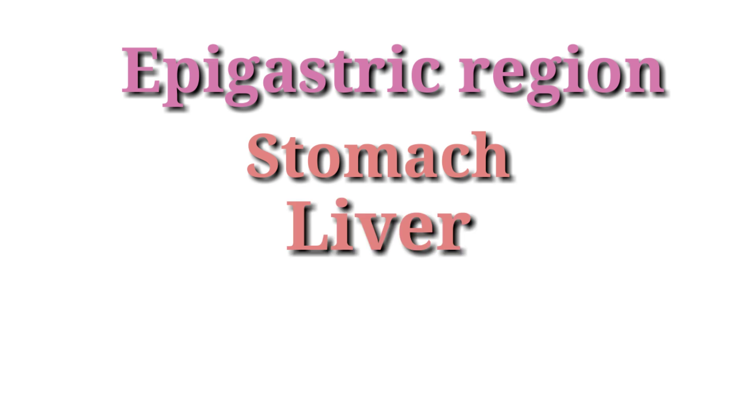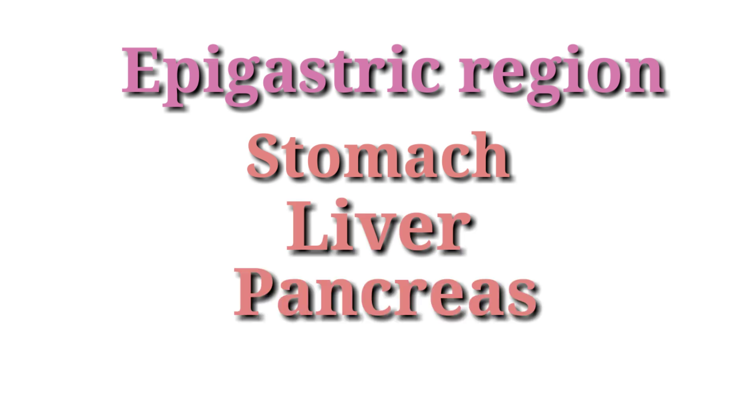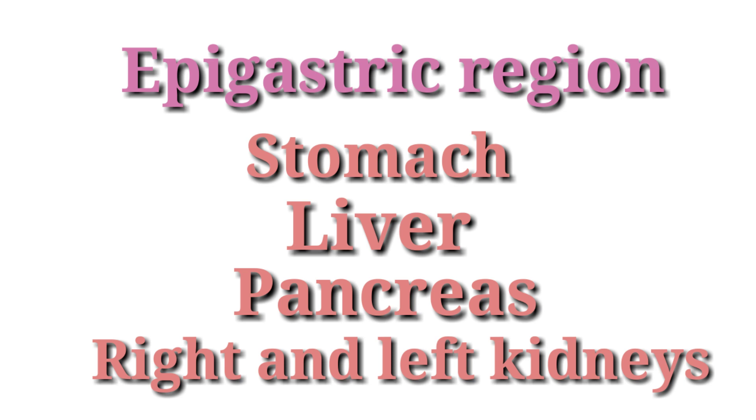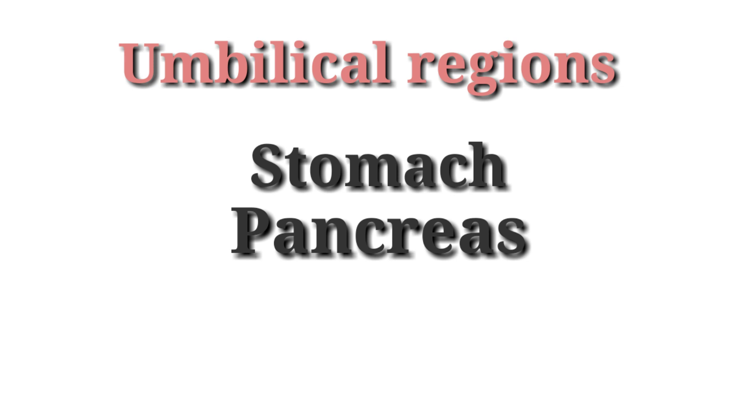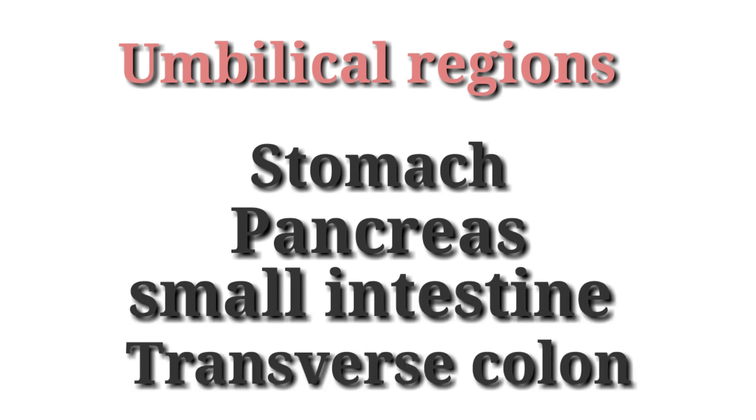The epigastric region is the middle upper quadrant of the abdomen. The umbilical region is the middle quadrant of the abdomen. Organs lying in the umbilical region are the stomach, pancreas, small intestine, and transverse colon.